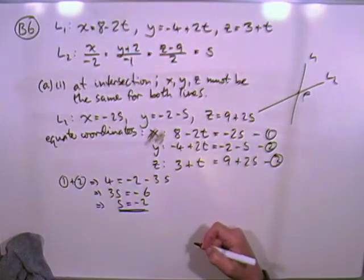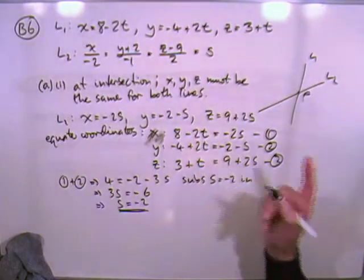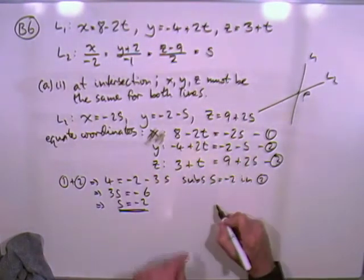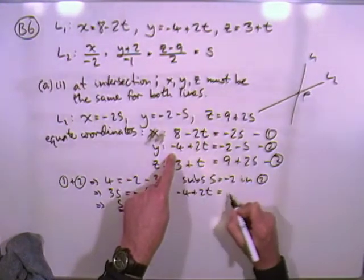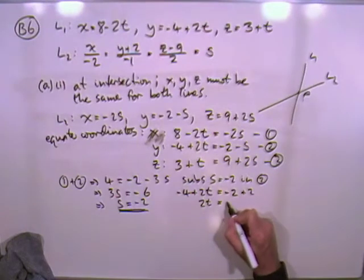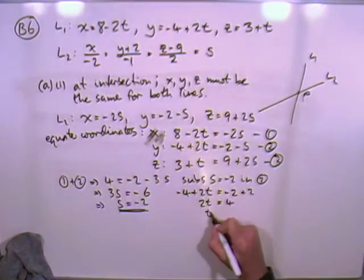Well, 1 and 2 are perfect, these t's will cancel out. So doing that, adding the two together, I get 4 equals negative 2 minus 3s. So taking that over, 3s will be minus 6, so S is negative 2. Right, put that back in. Which one? We'll stick it into number 2 will do. So, on to number 2. Negative 4 plus 2t is negative 2, take away a negative, so it'll be plus 2. So 2t is 4, so t is 2.